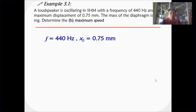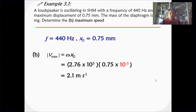For part b we need to find maximum speed. From section 2 we learned that the maximum value of velocity is given by ω × x₀. Using ω from the previous part, and the amplitude of 0.75 mm — taking note of the factor of 10 to the power of minus 3 — we get 2.1 metres per second.